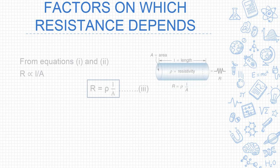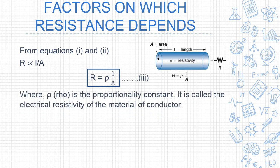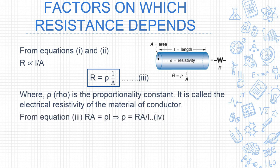Now let us combine all three factors — nature, length, and area. From the equations, resistance R is directly proportional to L and inversely proportional to area of cross-section A. Combining both results gives R is directly proportional to L upon A. When we remove the proportionality sign, the constant is rho (ρ), called the electrical resistivity of the material.